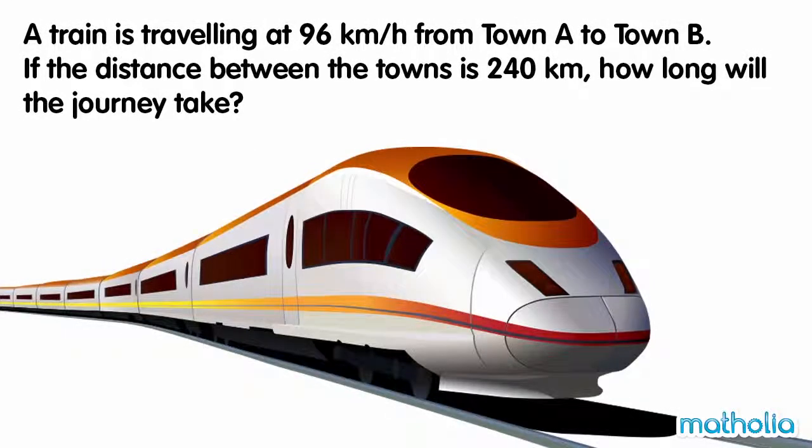A train is travelling at 96 kilometres per hour from town A to town B. If the distance between the towns is 240 kilometres, how long will the journey take?